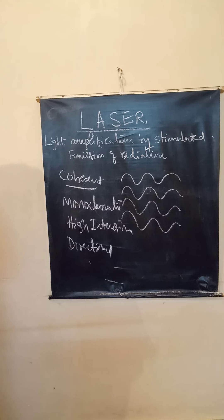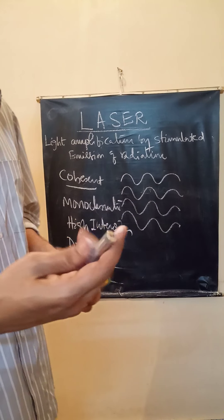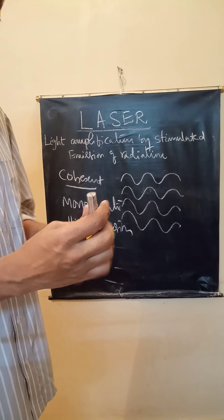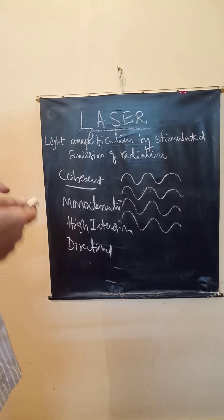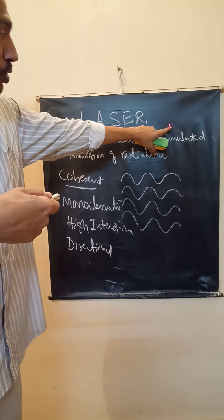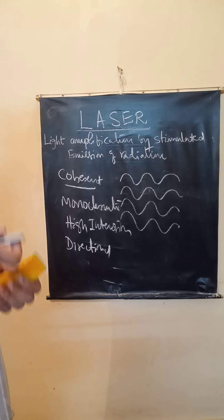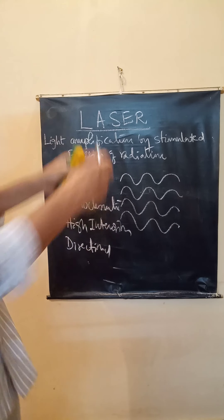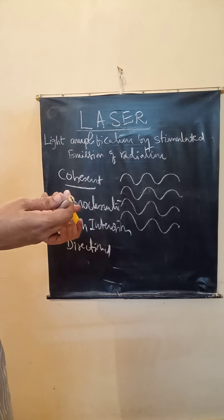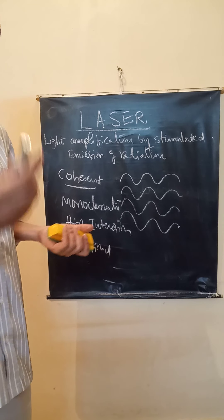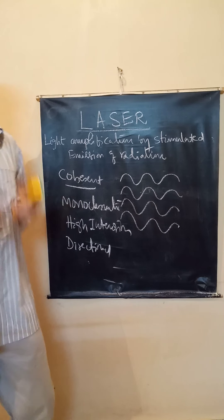For example, I will show you a laser torch. See, this is a toy laser — never look at this directly, it can cause harm to the retina. This laser light produces a unidirectional focused beam. Instead, suppose if you turn on an ordinary torch, you will see huge illumination on the wall — that light is diverging, it is not coherent. But laser light is focused into a point. So these qualities make laser special.